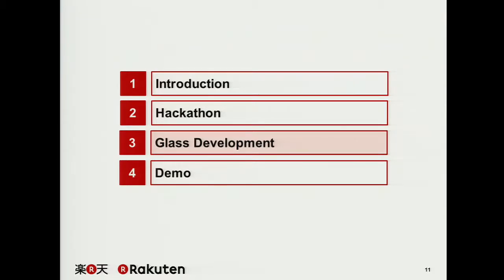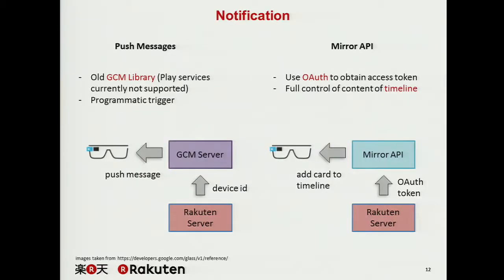Okay, if you're building a glassware application, one thing you probably want to do is send an actual event or some kind of notification to the user. How can you do that? First, you can use the push message system — basically the cloud messaging from Google. After your glass device registers to the GCM server and to the Rakuten server, the server can send a message through GCM to your device using a device ID.